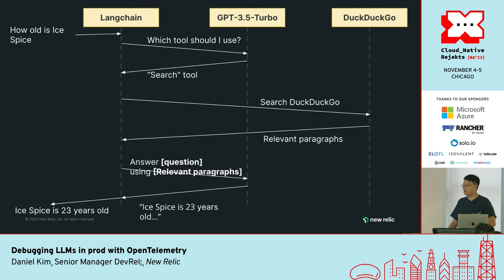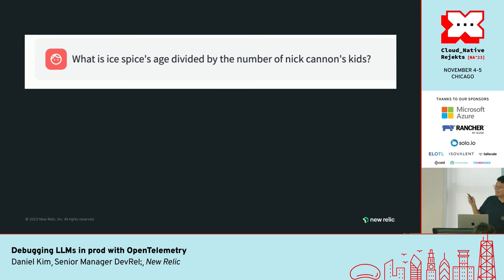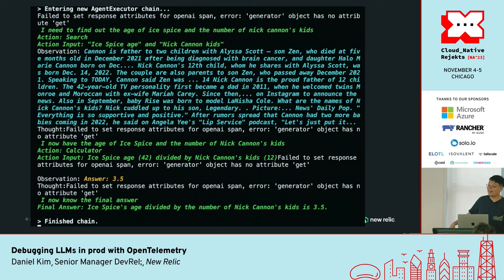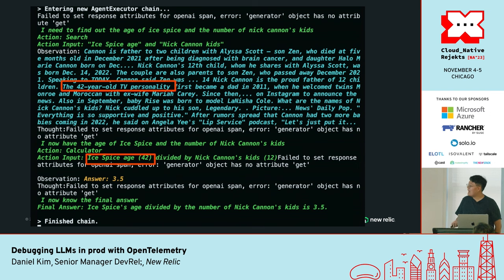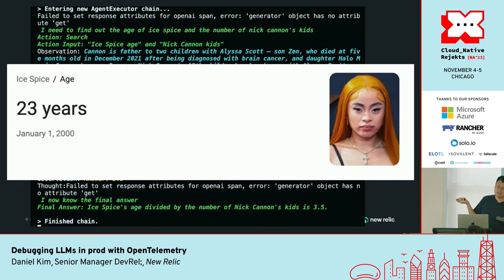This is a very simple example, but what if I give it a more complicated example that can trip it up? What is Ice Spice's age divided by the number of Nick Cannon's kids? Things start to break down a little bit. This is the actual logs of the step-by-step process to solve this problem. If you zoom in closely, it assumes that Ice Spice is 42 years old because it doesn't split up the query into two separate queries. It has one giant query to both determine how many kids Nick Cannon has as well as how old Ice Spice is. And this is wrong because Ice Spice is 23 years old.